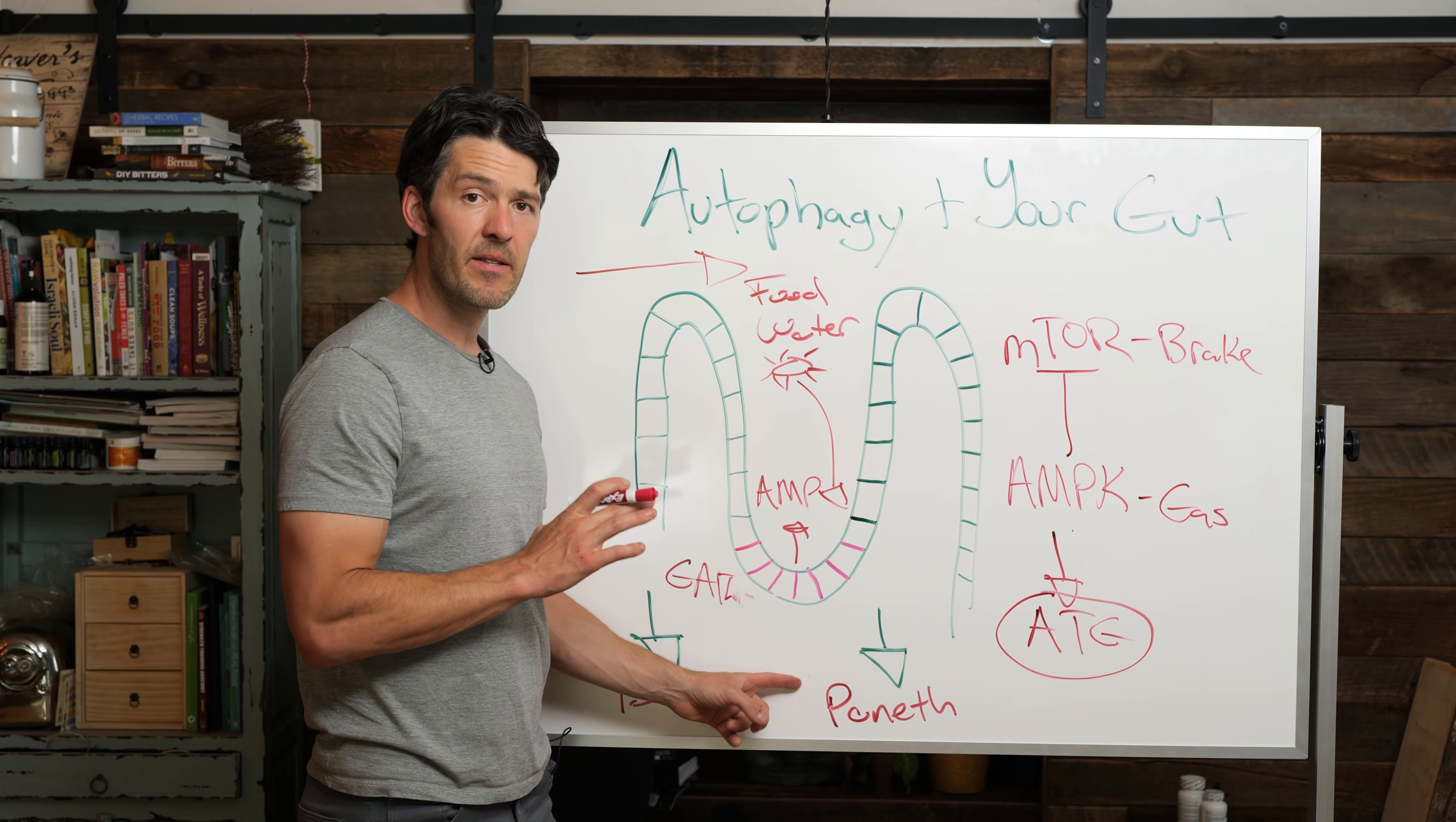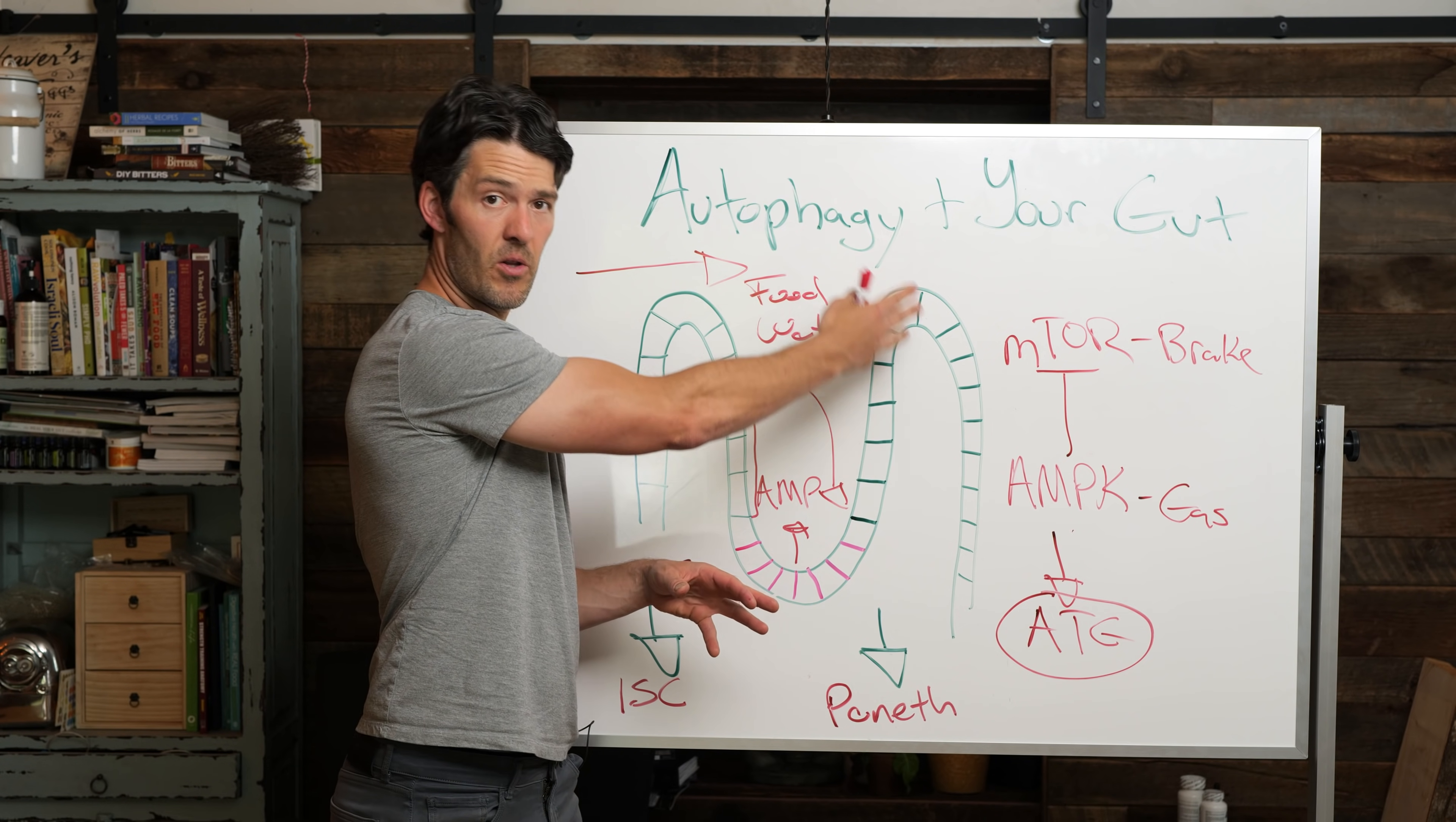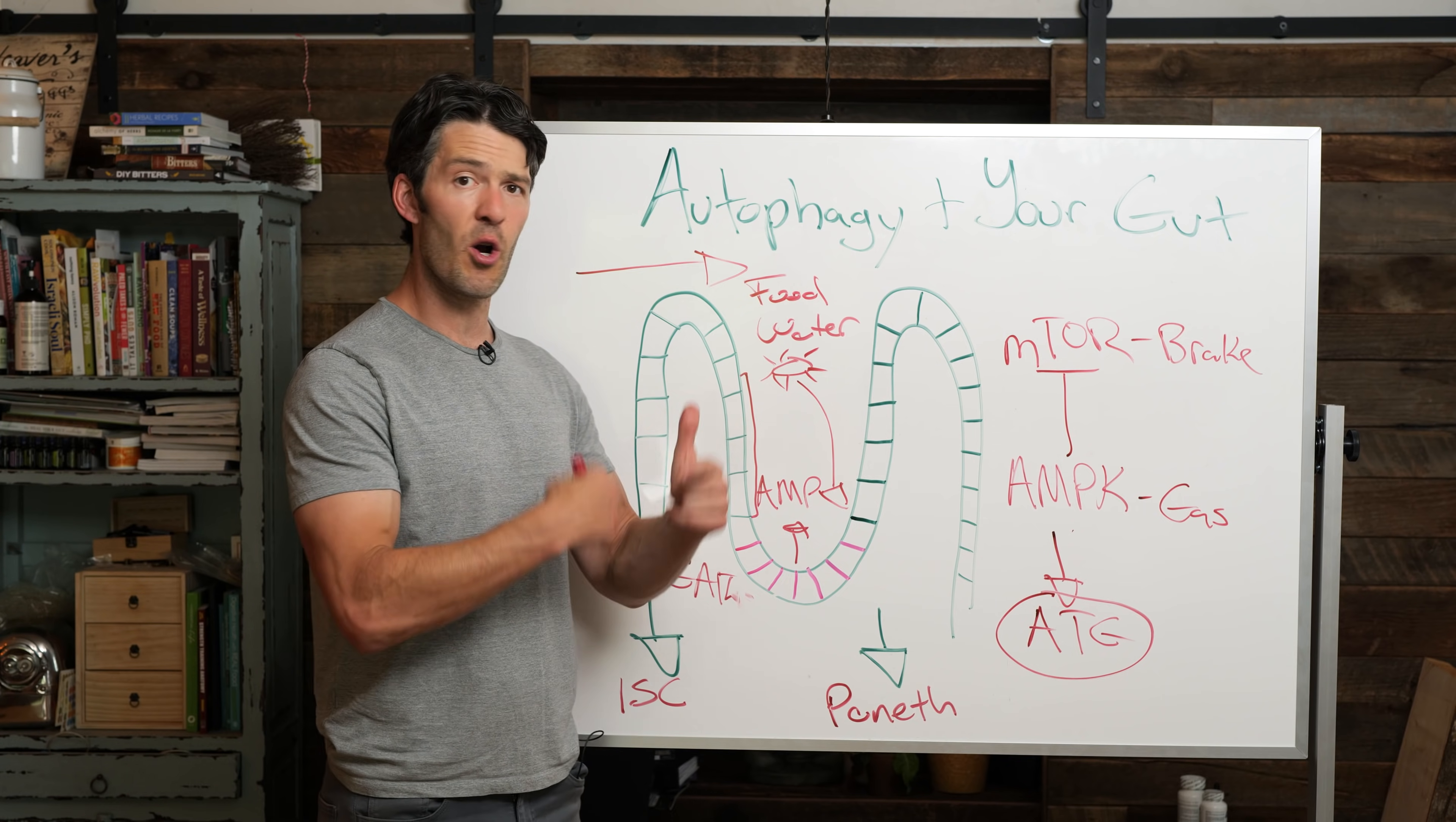Now, these paneth cells are key because what you have here is a little layer. Again, I'm really simplifying this. But this little layer of this mucosal, this antimicrobial peptides and stuff, so things can just slip along here. So we can absorb and we can move things along. But what happens is these paneth cells are intimately connected to the autophagy process. So what is making them function as well as the intestinal stem cells is autophagy. Because these cells are turning over a lot.